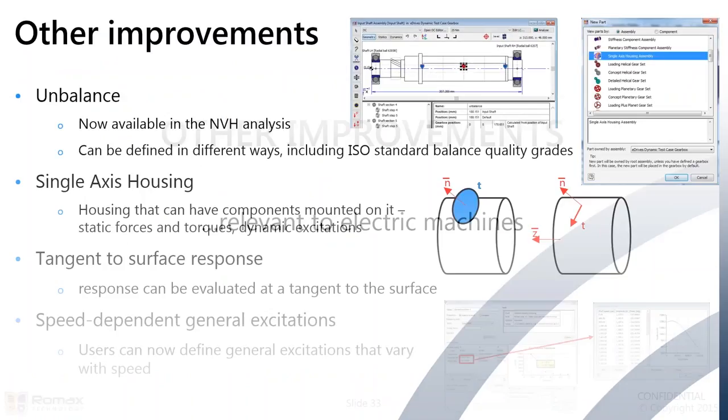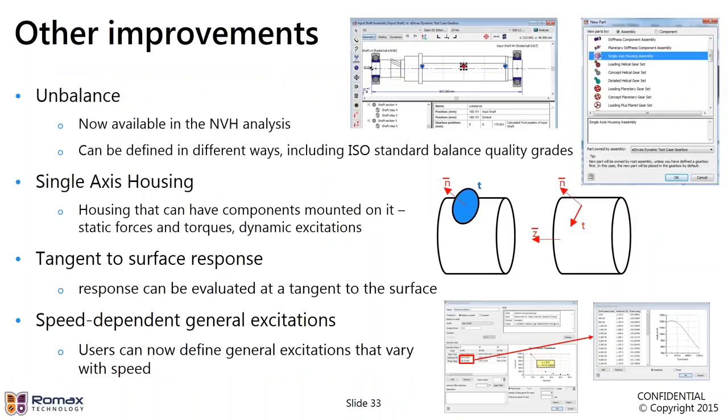So, just to mention a couple of other small improvements that come with this. As already partially mentioned, we've improved the unbalance. We can define the unbalance, including the ISO standard now for balance quality grades. We have a new FE component called the single axis housing, which is essentially a housing that has an axis that we can mount things on. We can mount static forces and torques and dynamic excitations. And this is to accommodate the electric machine excitations. We can also, in the post-processor for advanced whine, we can look at tangent surface response. And we also have the ability to have speed-dependent general excitations, which is what the radial forces and torque ripple are.